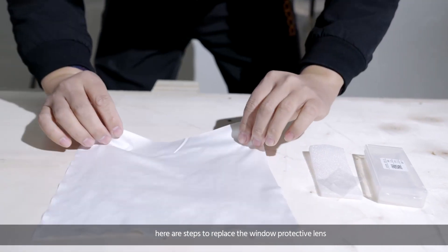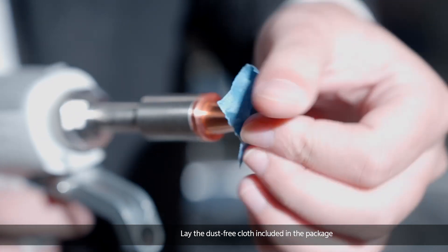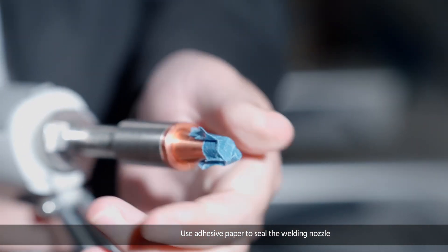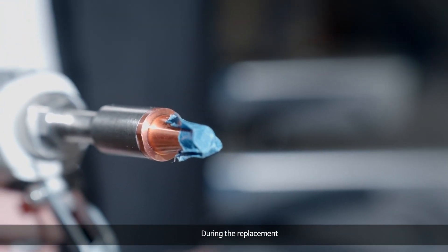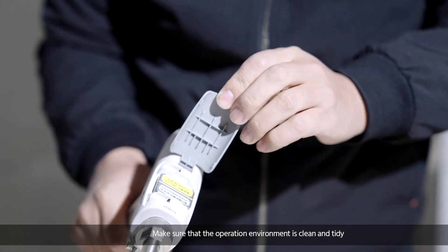Next, here are steps to replace the window protective lens. Lay the dust-free cloth included in the package. Use adhesive paper to seal the welding nozzle. During the replacement, make sure that the operation environment is clean and tidy.